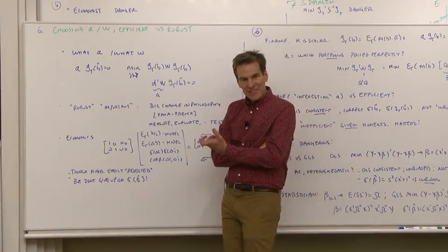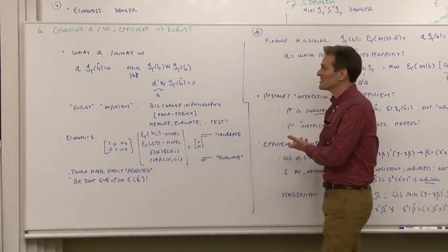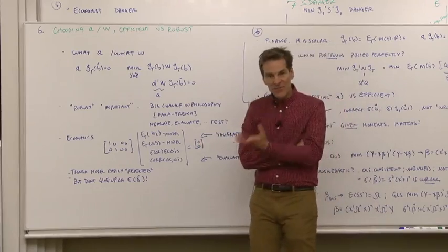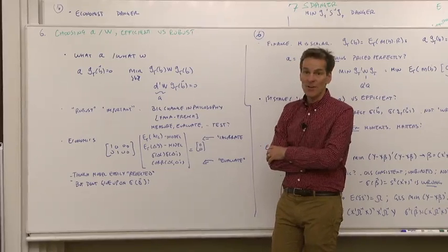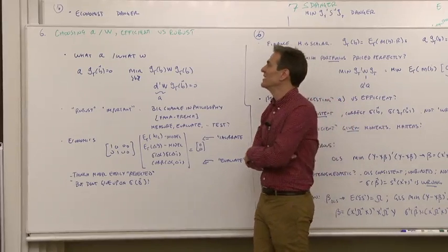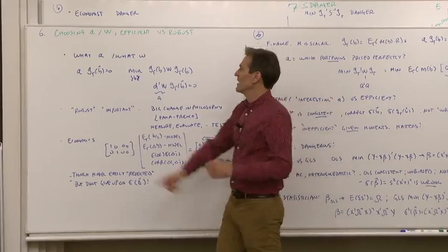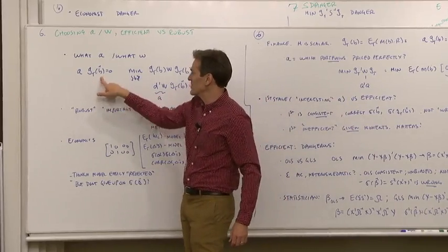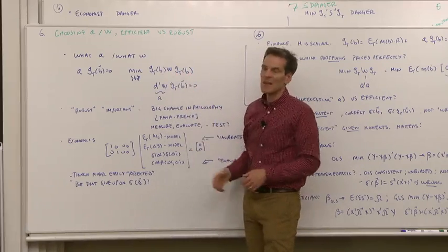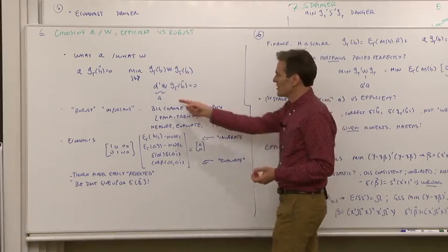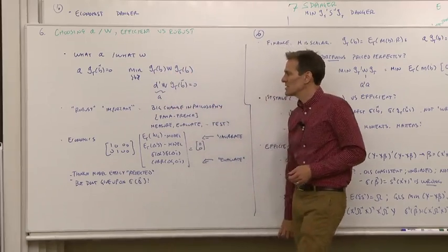So let's go back to the question of what A matrix to use, what weighting matrix to use. We saw the efficient solution, or we saw the idea that you could use anyone you want and at least get consistency, if not efficiency. The A selects which moments you set to zero, the W says which moments do you ask the minimizer to pay attention to, it's equivalent to an A matrix choice.